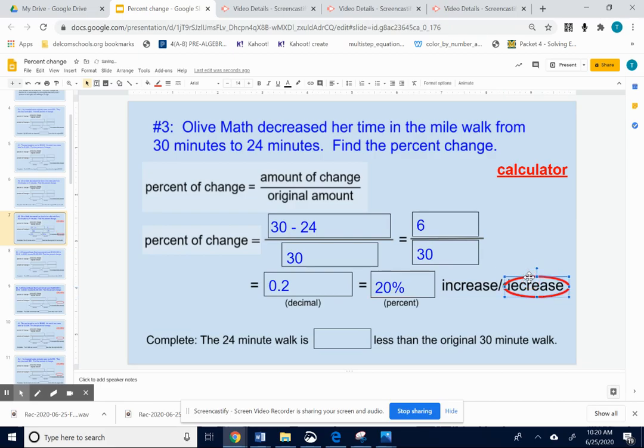So circle that. Complete the sentence. The 24-minute walk is 20% less than the original 30-minute walk.